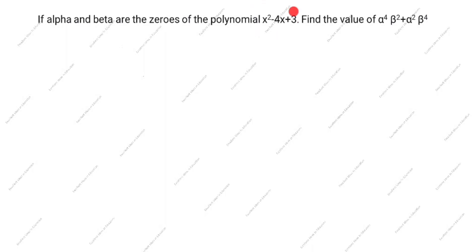What is given? x squared minus 4x plus 3. The zeros of the polynomial formula is ax squared plus bx plus c. Comparing, we get a is equal to 1, b is equal to minus 4, and c is equal to 3.